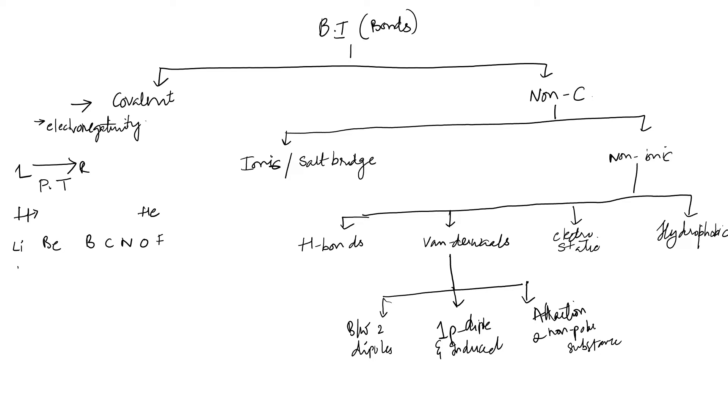So hydrogen electronegativity is 2.1, of lithium it is 1, beryllium is 1.5, boron is 2, carbon is 2.5—so it just increases by 0.5—nitrogen is 3, oxygen is 3.5, fluorine is 4.